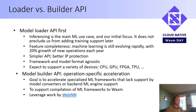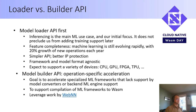The reason is that inference is obviously the main machine learning use case and our initial focus. A loader API is an easy way to support inference. In terms of feature completeness, machine learning is still evolving rapidly, with roughly 20% growth of new operations each year. A builder API would probably take multiple years to be functional and cover all major operations, versus a loader API, which treats a model as an opaque object. We can just define operations related to the machine learning loader and get done with it — that's a much easier path to market.